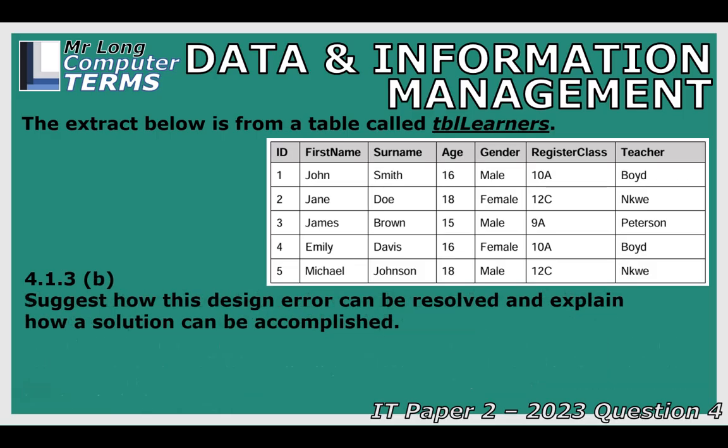Question 4.1.3B asks how this design issue can be resolved. The memo allows a diagram to explain the solution. The basic answer is we need two tables: one for learner details and one for register class details. All student information — ID, first name, surname, age, gender — goes into the TBL Learners table, while register class and teacher go into a separate register class table.